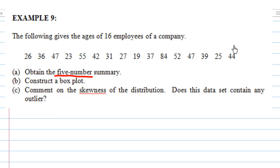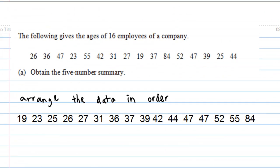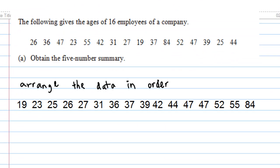To get the five number summary, so that you can get a box plot first, you must arrange the data in order. I arrange the data in order now: 19, 23, 25, 26, 27, 31, 36, 37, 39, 42, 44, 47, 47, 52, 55, 84.